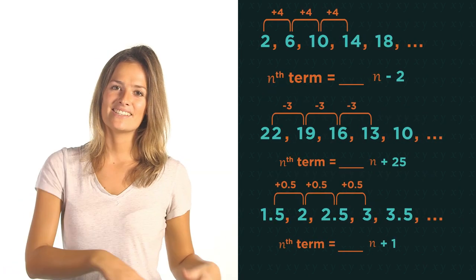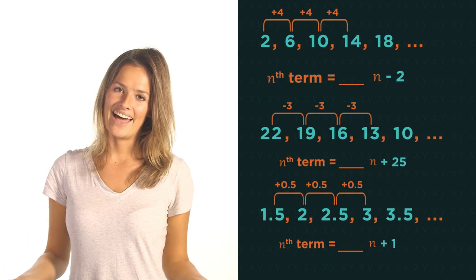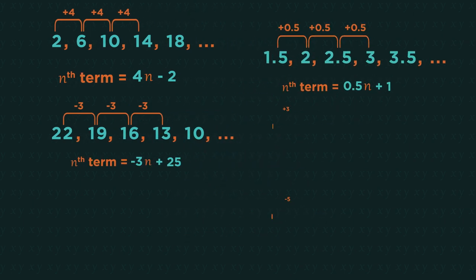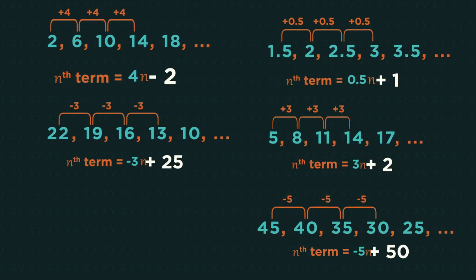Given these sequences, what numbers are missing from the nth term rules? Difference of 4, so the formula is 4n. Difference of minus 3, so the formula is minus 3n. Difference of a half, so the formula is 0.5n.